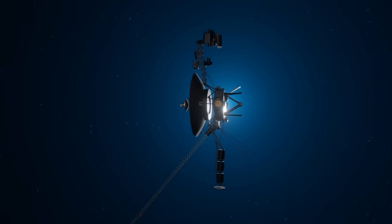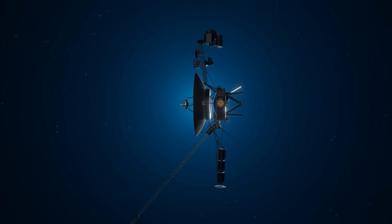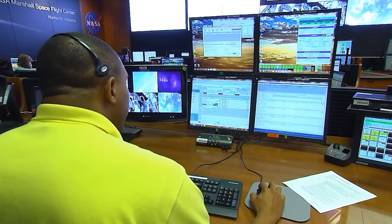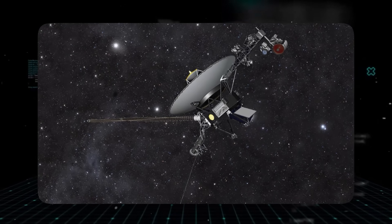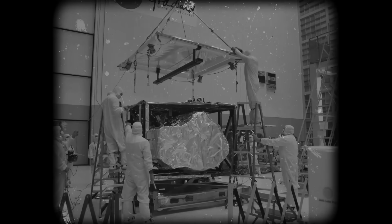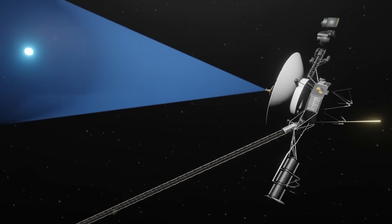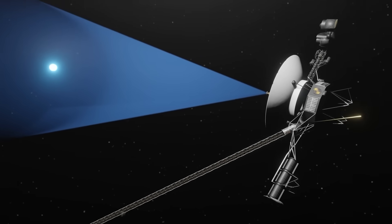Then, just as suddenly as it went silent, Voyager 2 came back online. But the data it sent back was impossible. The thing is, Voyager 2 doesn't have encryption capabilities. It was built in the 1970s. Yet, the binary stream now pulsing back to Earth was encrypted.